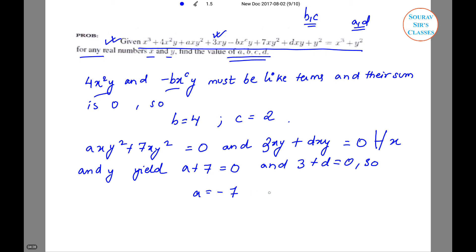a + 7 = 0 and 3 + d = 0, so we have a = -7 and d = -3. So we have the values of all the terms now. Thus, a = -7, b = 4, c = 2, and d = -3.